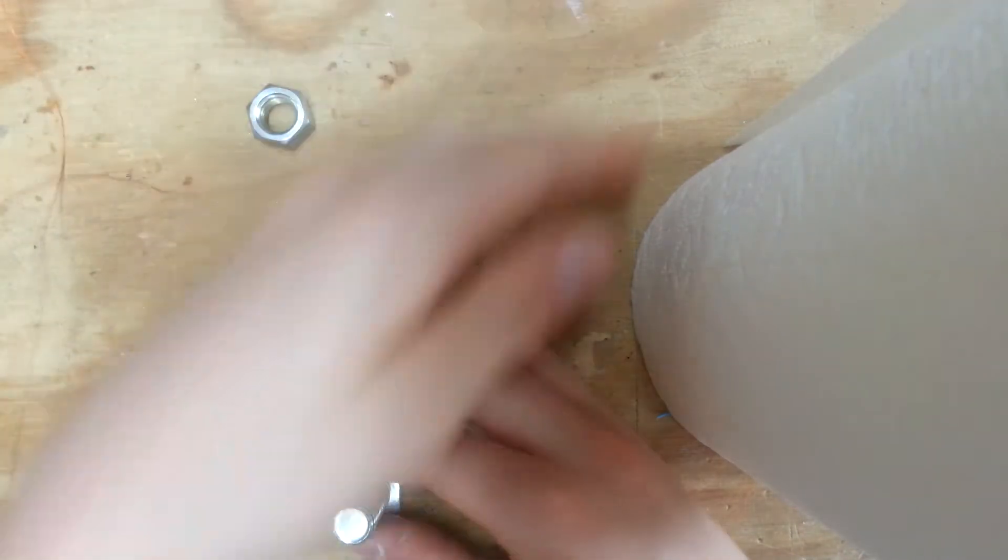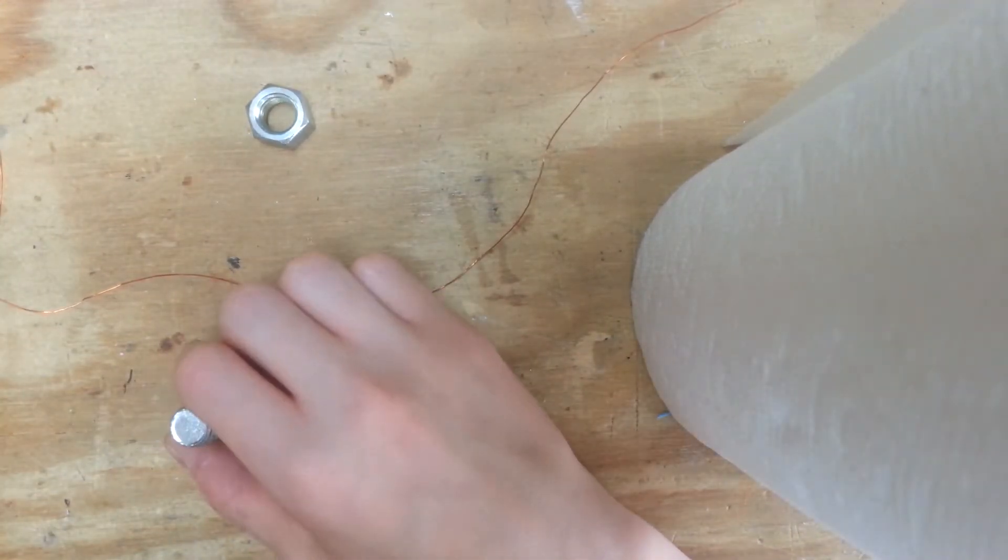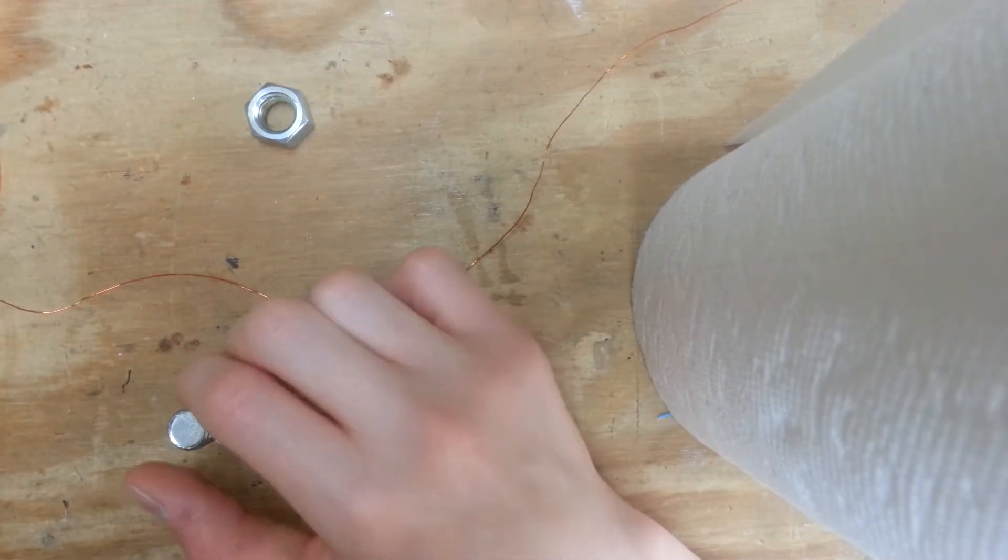Keep in mind, that cathode ray tube holds 5,000 to 6,000 volts. And if you touch that, it won't kill you, it'll just leave a mark.